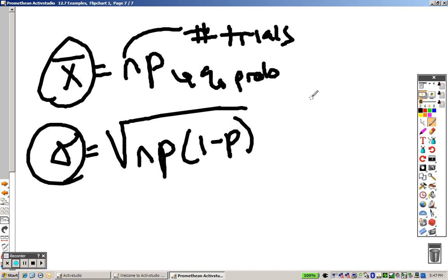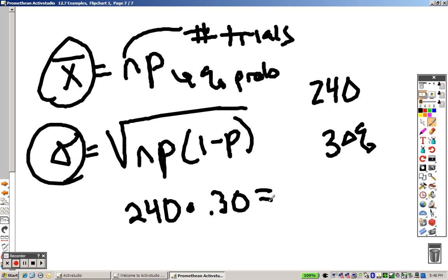So, all that means is if there were 240 people in a trial, so there's the number of people, and the percentage of them being successful, we'll just say, was 30%. To find the mean, you would take 240 times 30%, so 240 times 30%, that means you would find the mean of 72, that would be your mean.